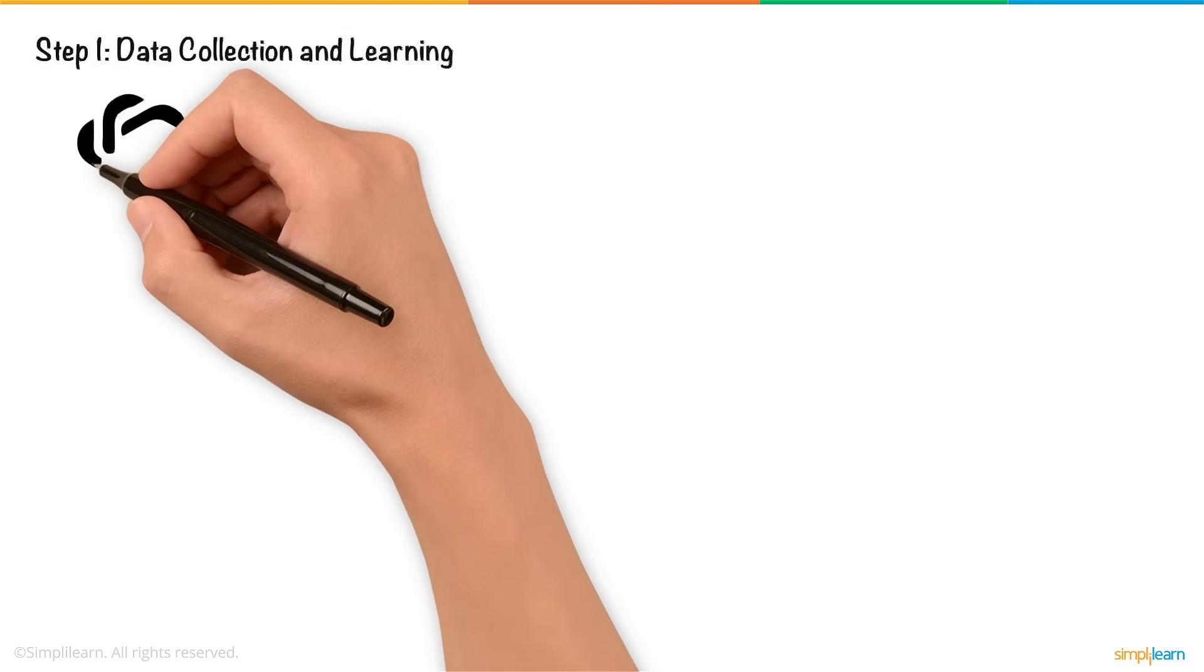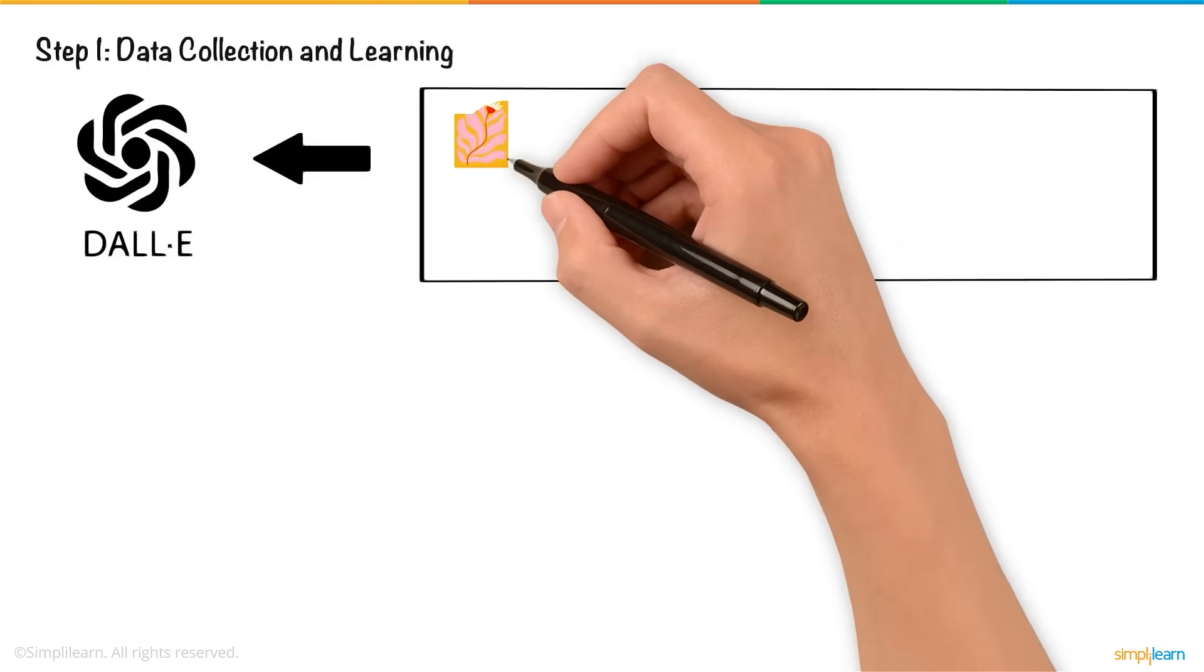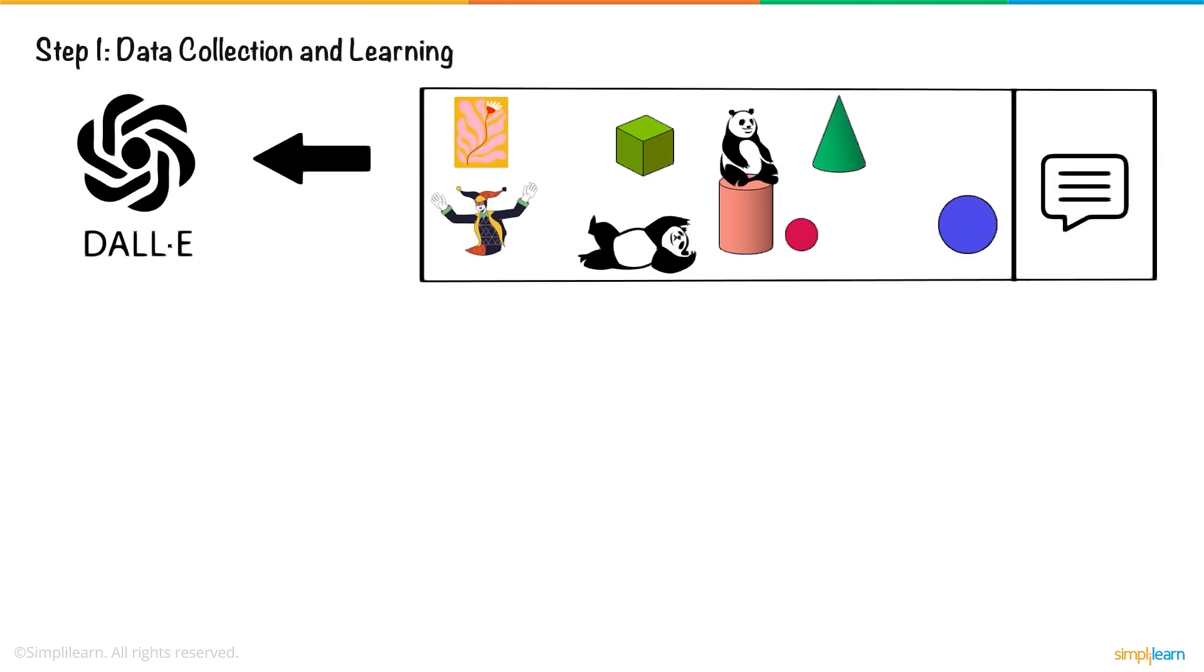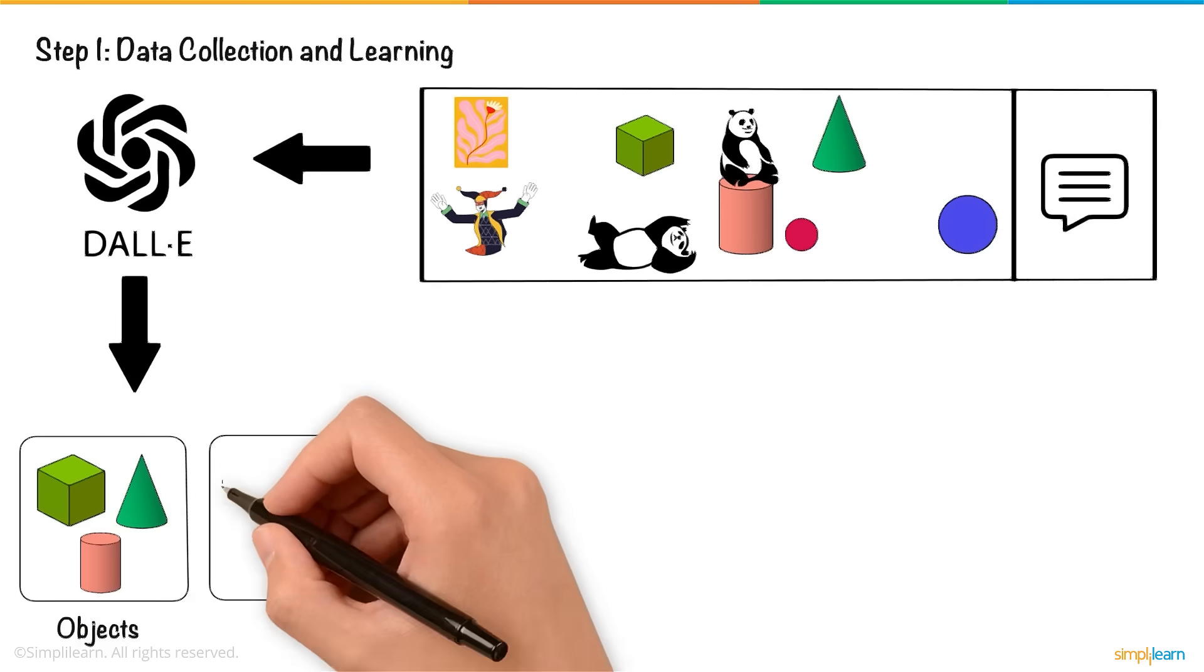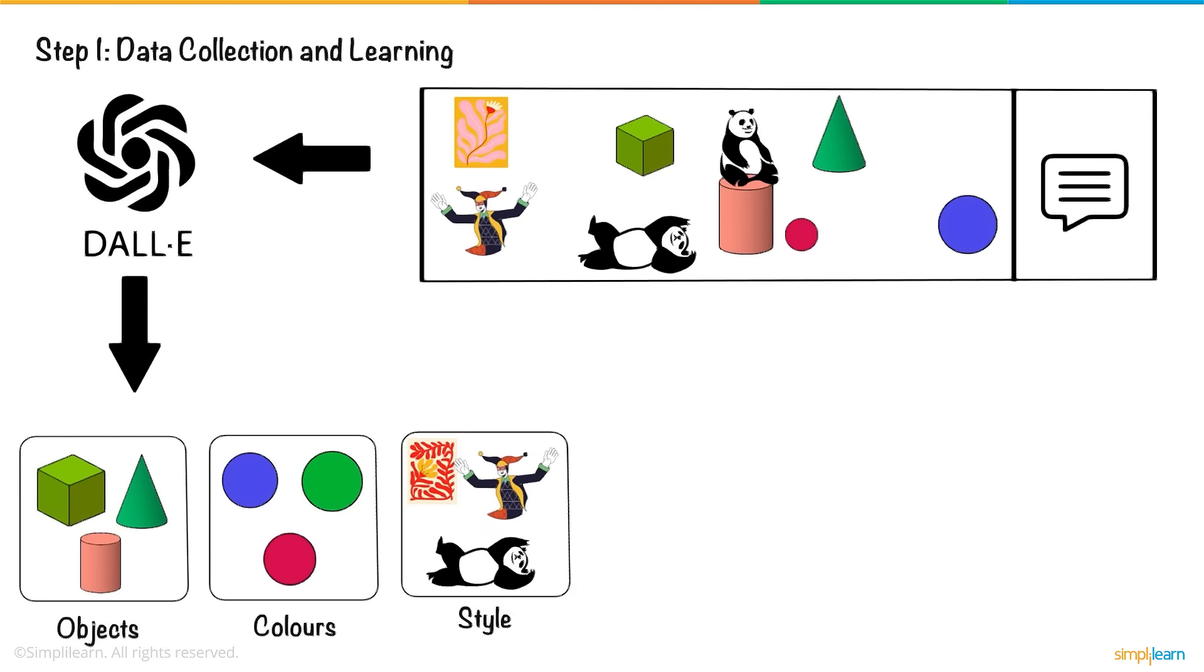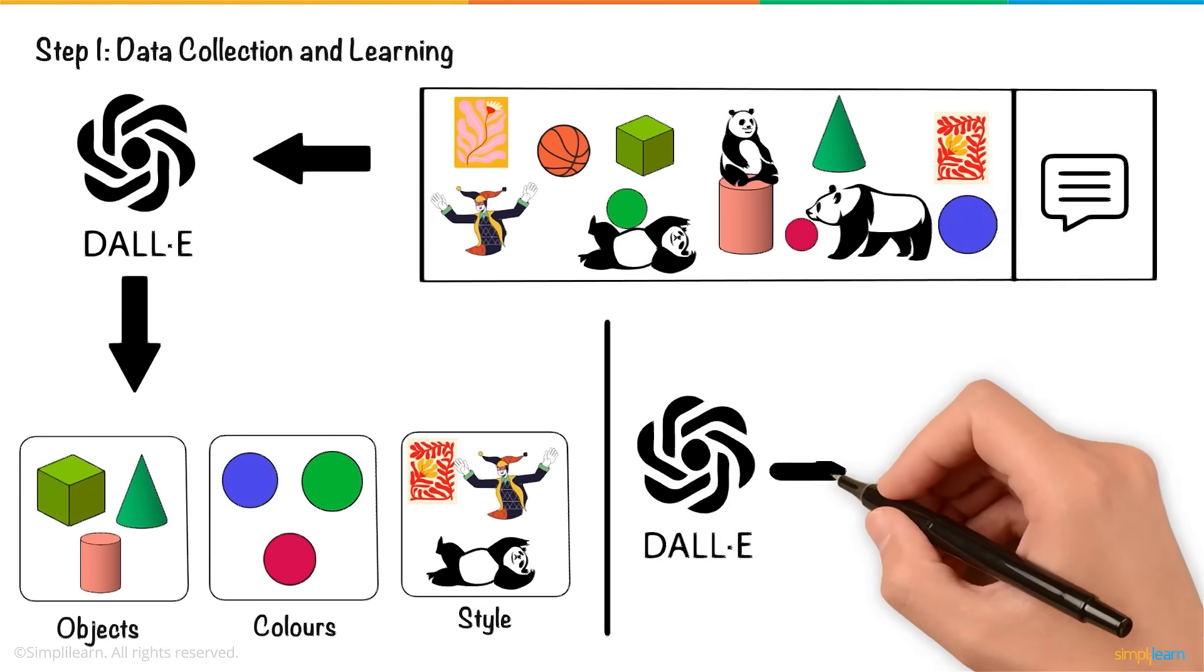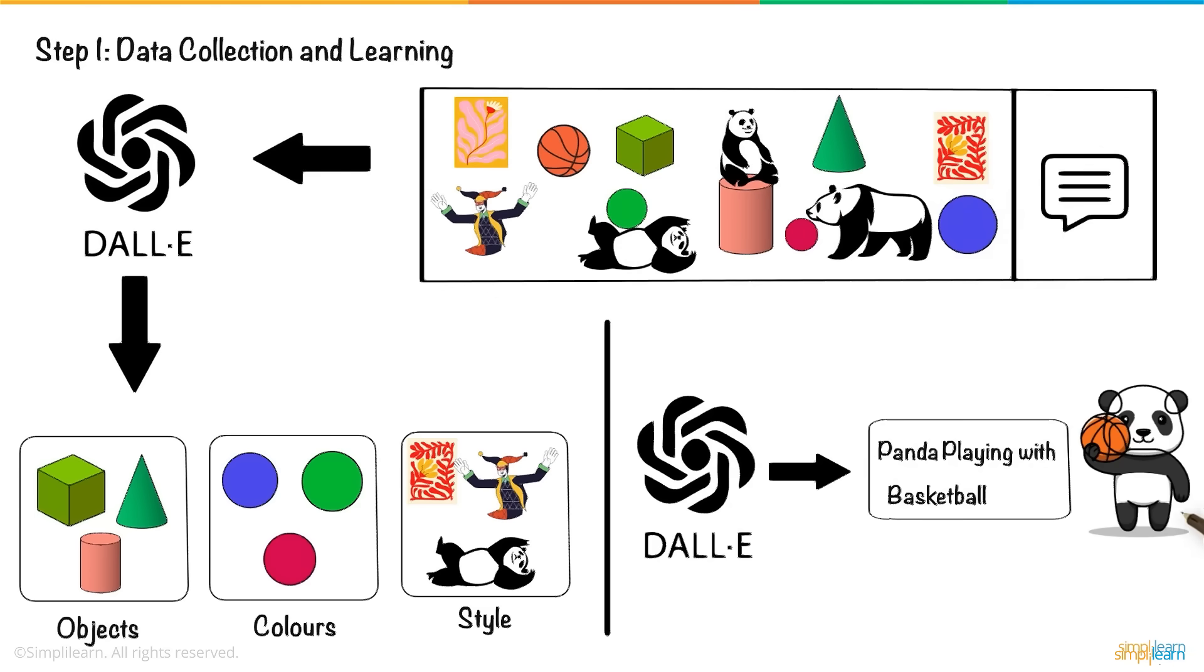Data collection and learning: AI models like DALL-E are trained on large datasets of images paired with text descriptions. These datasets teach the model to recognize different objects, colors, styles, and how to associate text with corresponding images. The more data the AI learns from, the better it can generate accurate and diverse images based on user prompts.